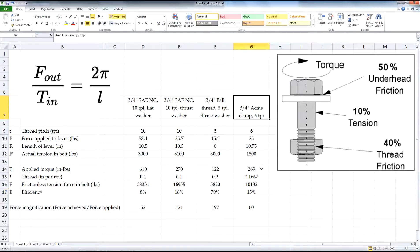And, here's the Acme thread. It, in this case, actually didn't perform as well as a National Course thread with the thrust washer. But, it did perform basically twice as well as the usual assembly with just the flat washer. Now, since we're kind of comparing apples and oranges here because the pitch of the thread systems varies for the different tests, I thought it would be interesting to look at the ratio of the applied force to the wrench to the tension that was achieved in the bolt. So, this is like an amplification factor.